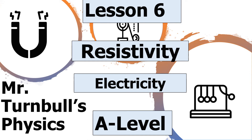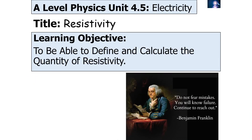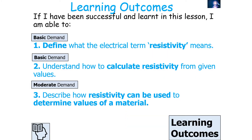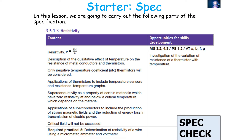Hello and welcome to today's lesson on resistivity, which is part of the electricity topic in AQA A-level physics. In today's lesson we're going to look at defining and calculating the quantity of resistivity. If we've been successful in this lesson, we should be able to define what the electrical term resistivity means, understand how to calculate resistivity from given values, and describe how resistivity can be used to determine the values of a material. This links into AQA A-level physics specification 3.5.1.3 resistivity.